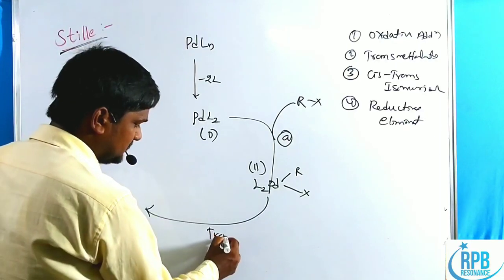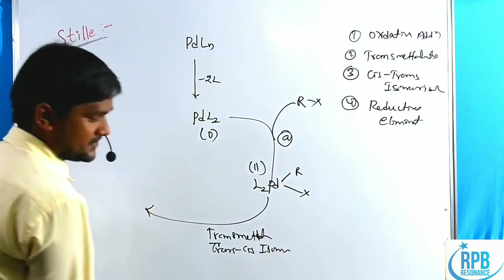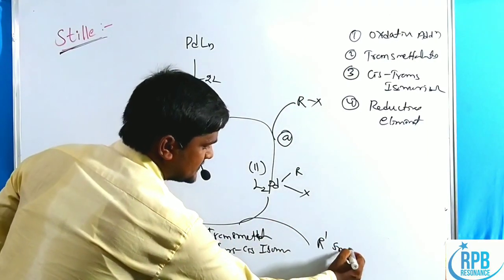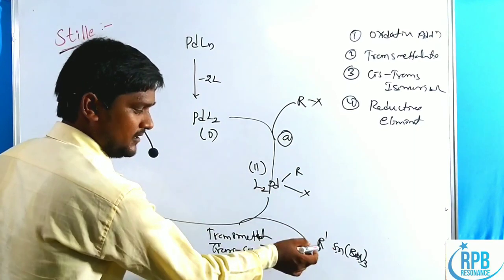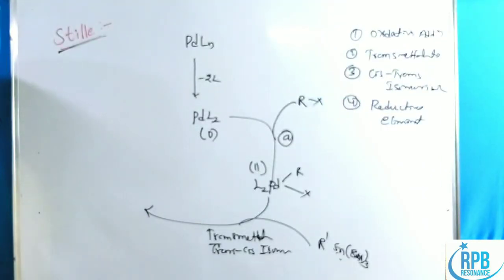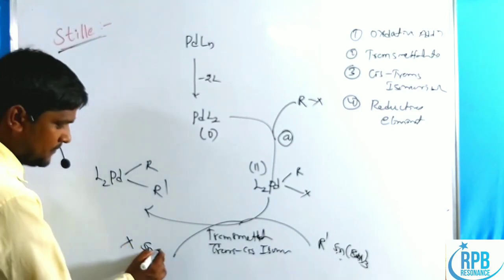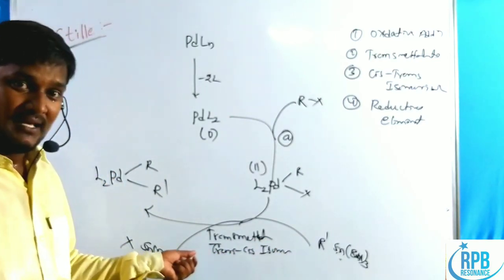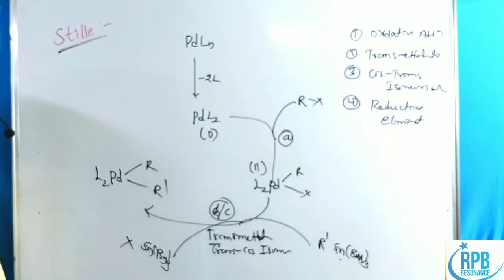In the second step, transmetalation occurs followed by trans-cis isomerization — these two steps occur together. In the presence of R'-Sn(Bu)₃, the R' group transfers from tin to palladium. This is the transmetalation step, giving Pd(R)(R')(L)₂, and the halide is eliminated with the stannous compound as Sn(X)(Bu)₃. For compounds with cis-trans centers, trans-cis isomerization also takes place.